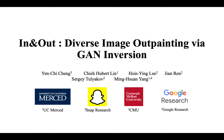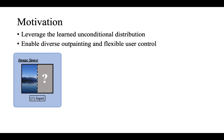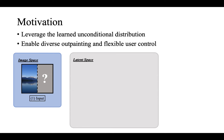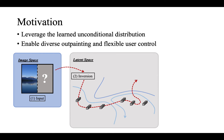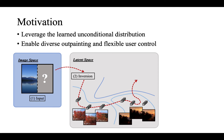In the first work, In&Out: Diverse Image Outpainting via GAN Inversion, we attempt to tackle these issues. Instead of modeling the task as an image-to-image problem — a conditional generation task — we want to take advantage of the recent amazing progress of unconditional generation models, such as StyleGAN. Instead of directly generating the outpainting region, we first train an unconditional GAN, then explore the latent space to find the latent vectors that can generate the desired output.